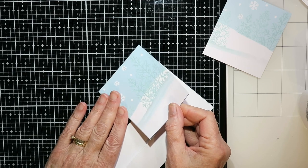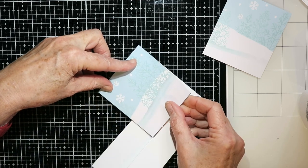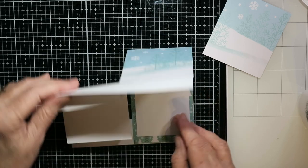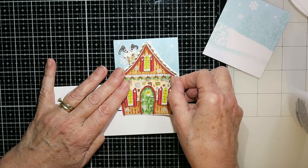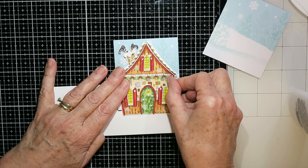Now on the outside, I've cut this landscape section off. And I've trimmed it down to three and a half inches wide. And I've glued it on. And I'm just gluing on my little house.